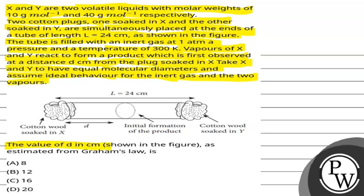The value of d in cm shown in the figure as estimated from Graham's law is: option A is 8, option B is 12, option C is 16, option D is 20.